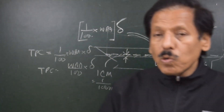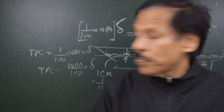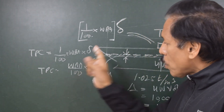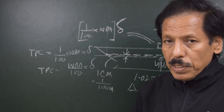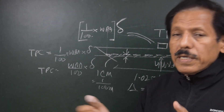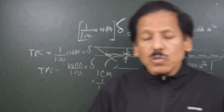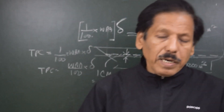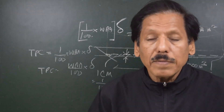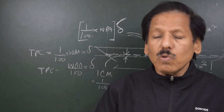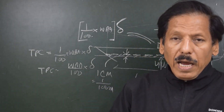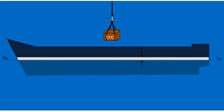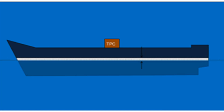Those sailing on board ship should also know the reverse relationship: water plane area is equal to 100 × TPC divided by density. Normally TPC for a ship is given for salt water. We should always remember that water plane area of the ship is approximately 100 times the TPC. TPC is known from the general particulars or the stability tables. For accurate water plane area: 100 × TPC divided by 1.025.